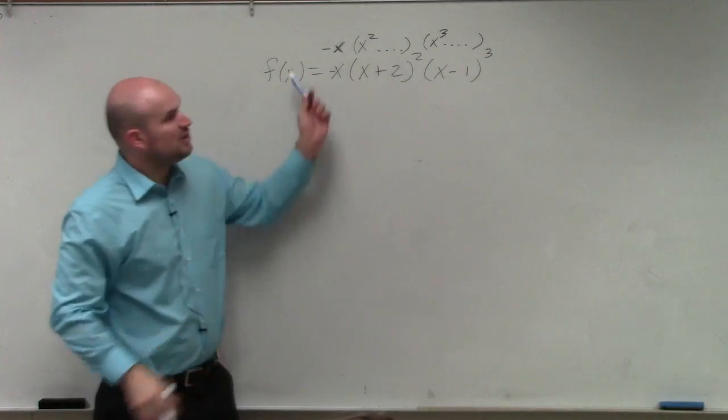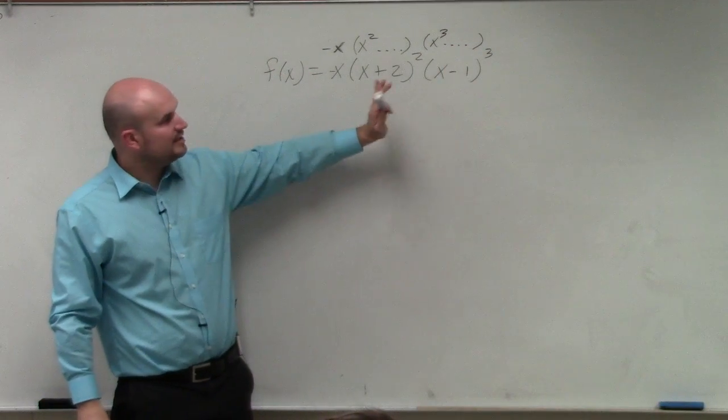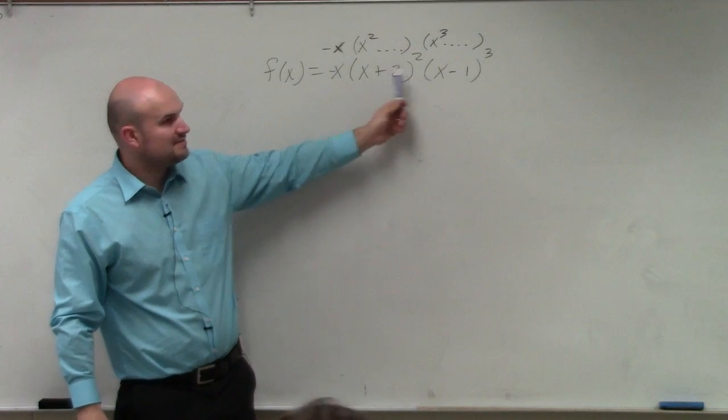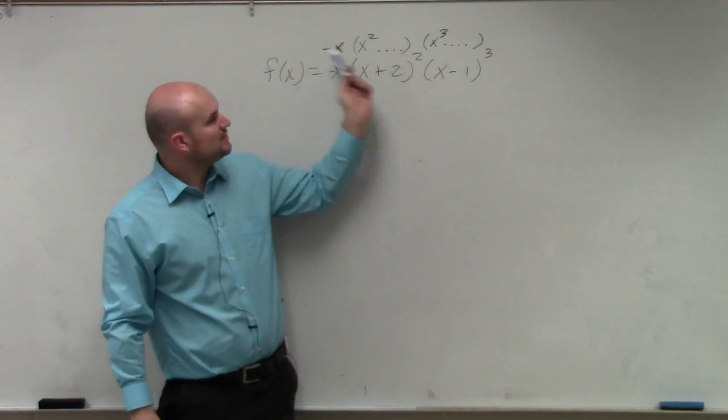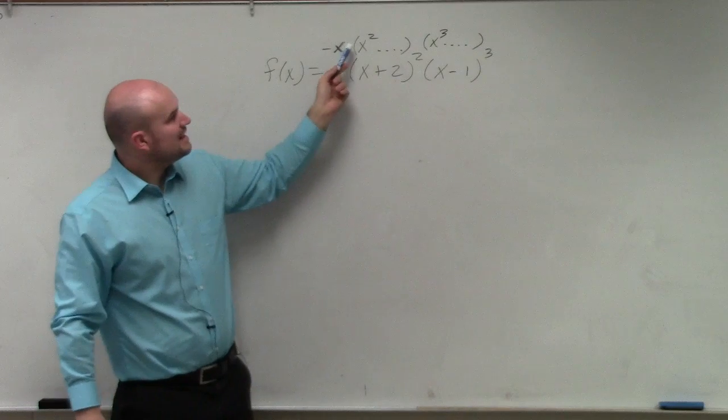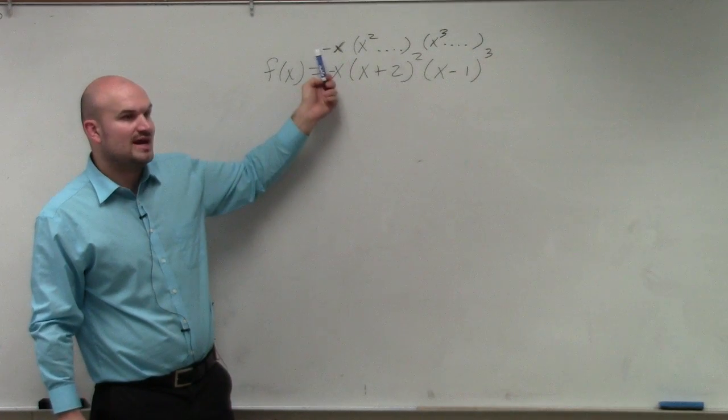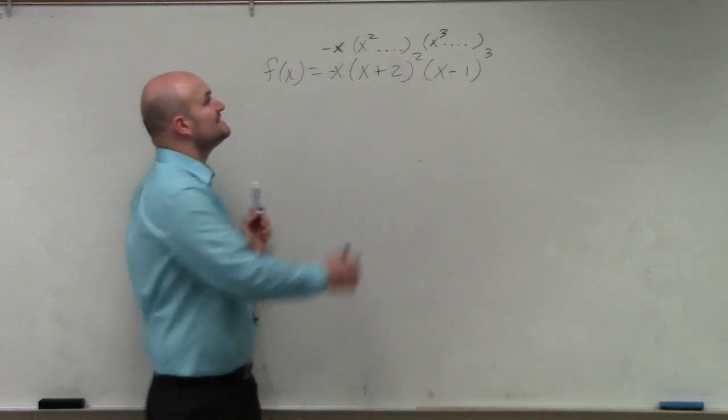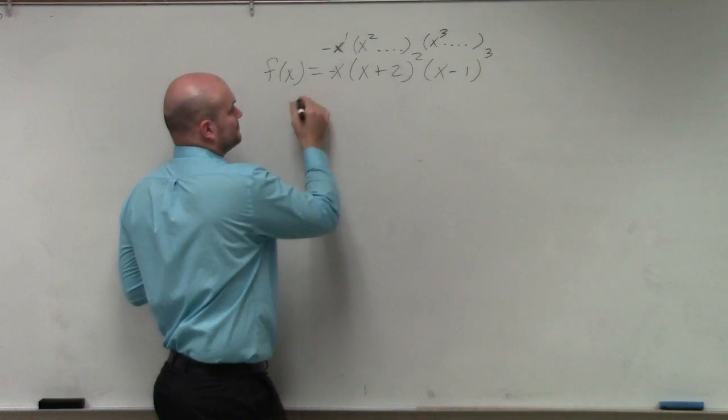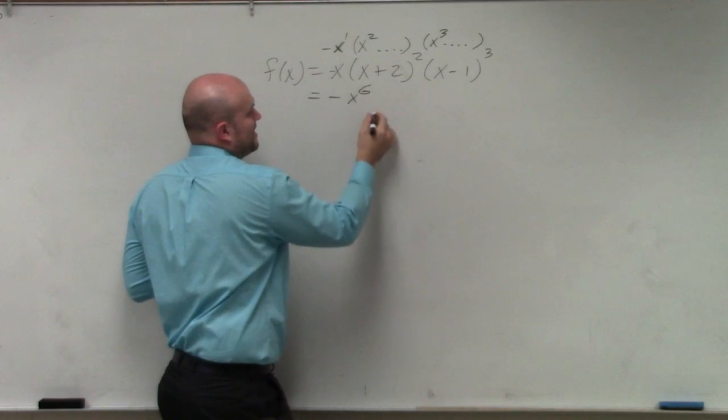So then, if I was to multiply all these out, and again, we don't really need to do that. You could obviously multiply all these out if you wanted to. But anyways, if you were to multiply these out, you'd have an x cubed times x squared times negative x, which would give you a degree of x to the sixth power. And it'd be a negative x to the sixth power, right?